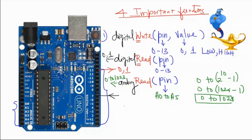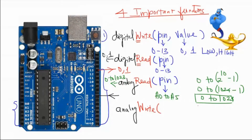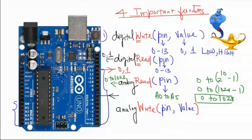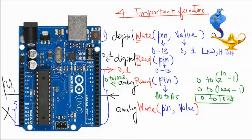The final function discussed was AnalogWrite. As usual, it takes two parameters: which pin you want to write to, and what value you want to write. Interestingly, in AnalogWrite we do not use the analog pins (A0–A5) for writing any analog value — those analog pins are used only for reading analog data, not for writing.